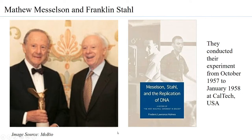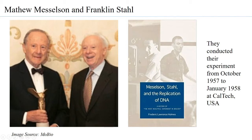Both Matthew Meselson and Franklin Stahl were very young when they began these experiments to prove that DNA replication is semi-conservative. Franklin Stahl had already finished his PhD while Matthew Meselson was in the last stages of his PhD when they decided to collaborate. They conducted their experiment from October 1957 to January 1958 — a very short duration — working at Caltech, USA. There is also a book written by science historian Frederick Lawrence Holmes covering their journey.